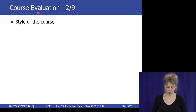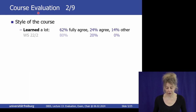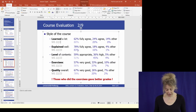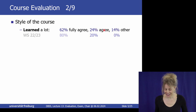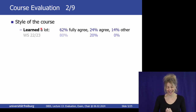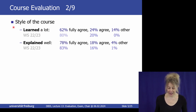Style of the course: 62% learned a lot, about 60% agree. That means 38% don't fully agree — maybe a reflection of not attending or not doing anything. Explained well: about 80% — I think that's statistical variance compared to last year. Level of contents: a good number between appropriate and high; if everybody says appropriate or easy, then it's too easy.